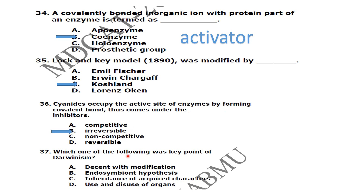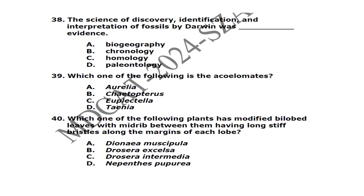Which one of the following was a key point of Darwinism? Descent with modification — that is the key point. The science of discovery, identification, and interpretation of fossils by Darwin was evidence from paleontology.